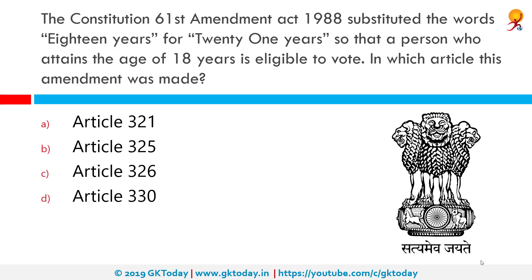The Constitution 61st Amendment Act 1988 substituted the words '18 years' for '21 years', so that a person who attains the age of 18 years is eligible to vote. This amendment was made in Article 326. The 61st Amendment lowered the voting age for elections to the Lok Sabha and to the legislative assemblies of the states from 21 years to 18 years, by amending Article 326 of the Constitution, which concerns elections to the Lok Sabha and the assemblies.